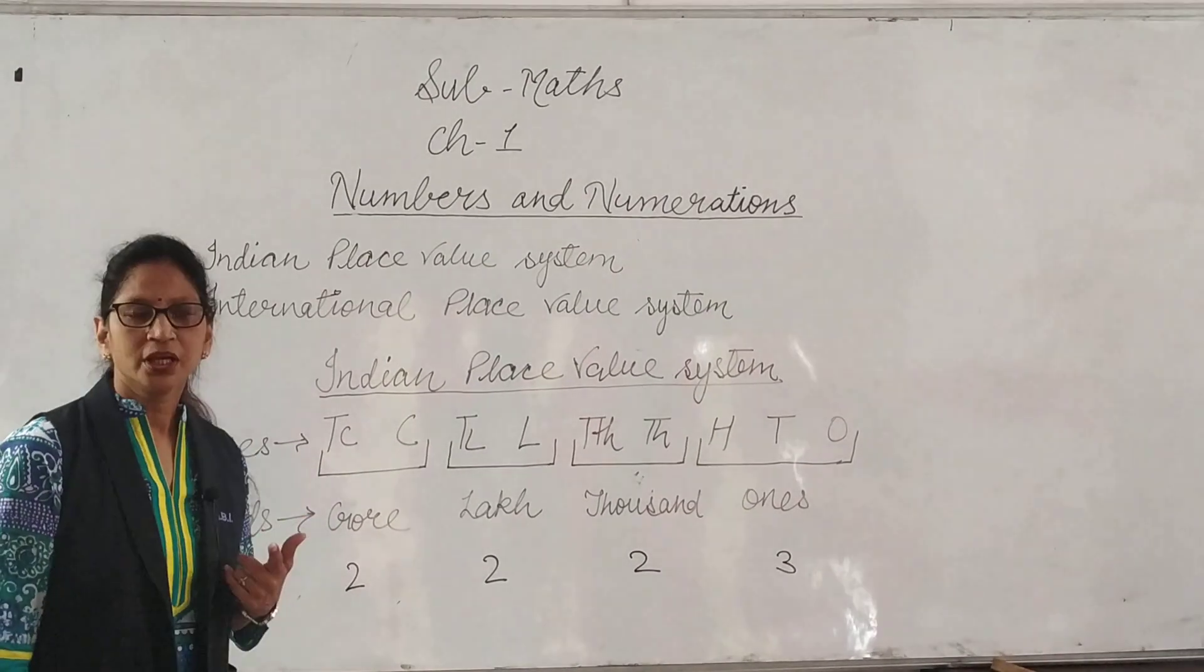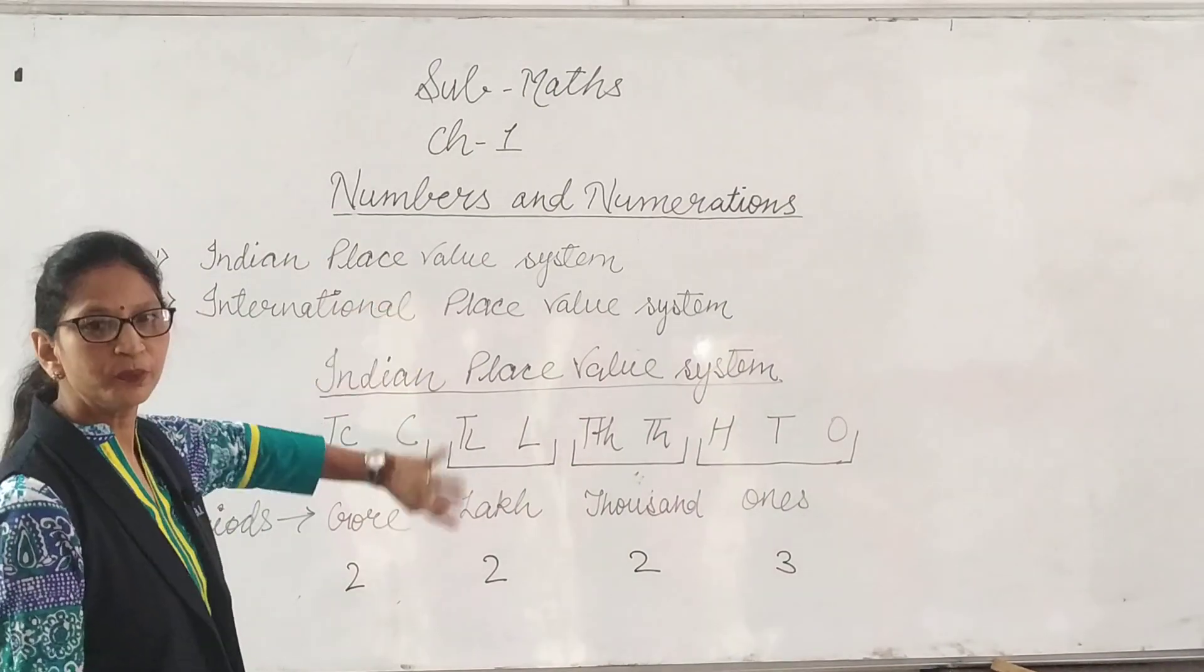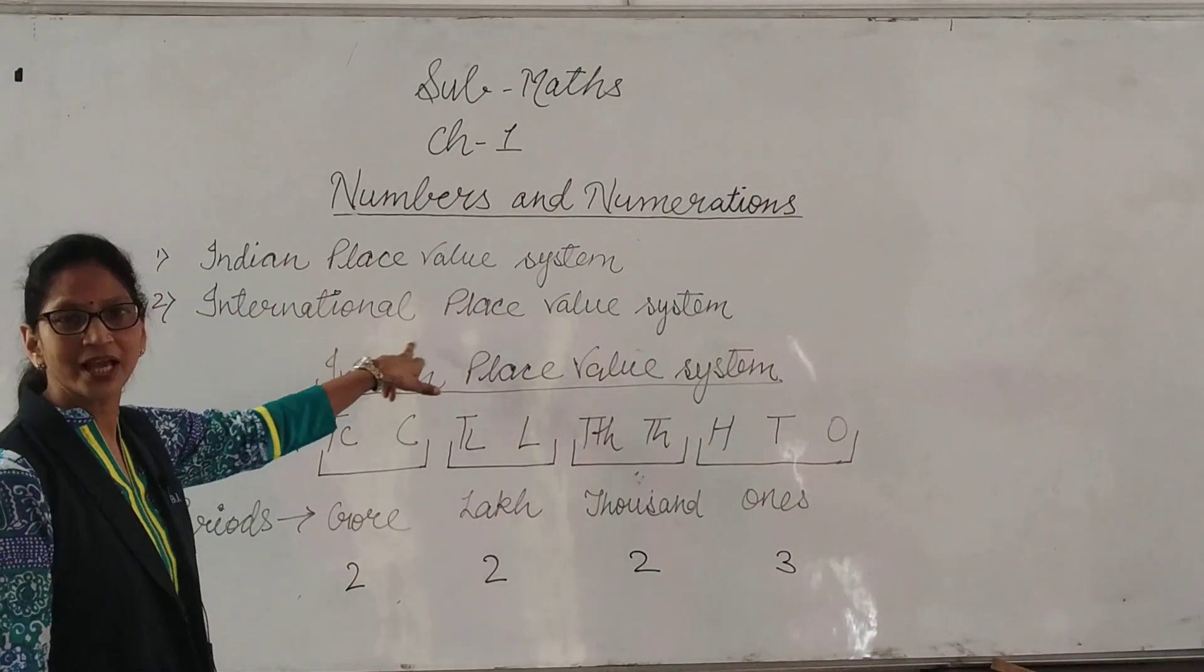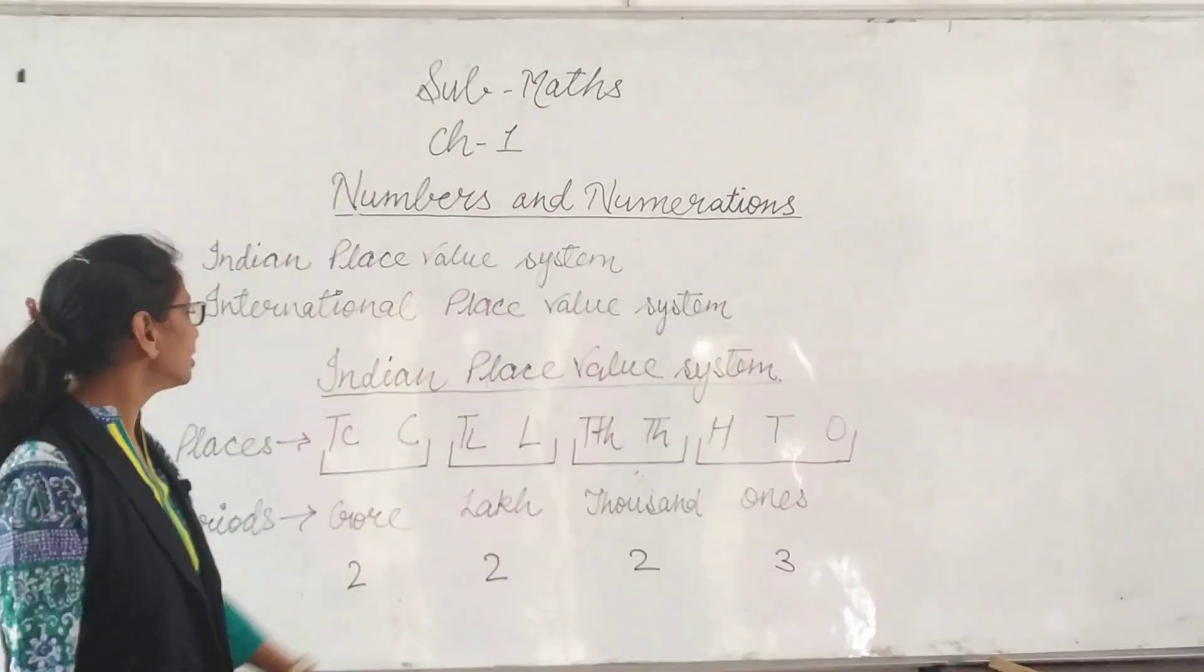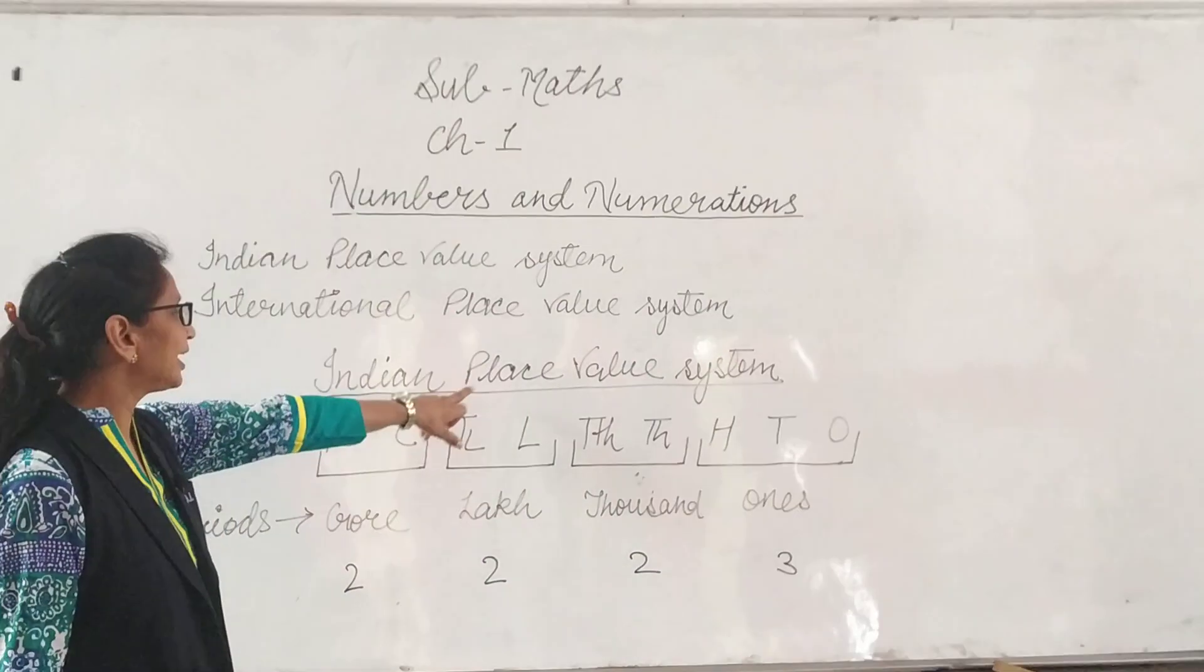Now we talk about numeration systems. There are two systems of numeration. First is Indian place value system and second is international place value system. First, we will learn Indian place value system.